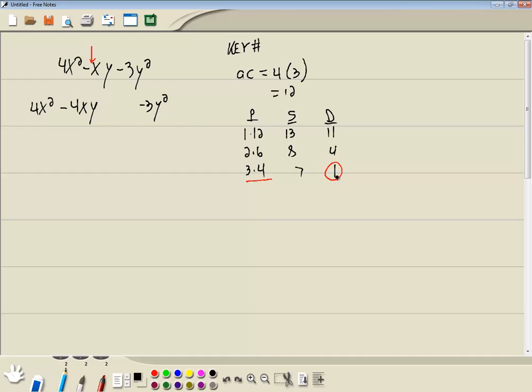The number with circles in the difference column, D for different signs, means one will be positive, one will be negative. Since the 4 is negative, then the 3 has to be positive. And you notice the extra variables here don't really change anything. All that matters is that this middle term that has both x and y, these both have x and y.